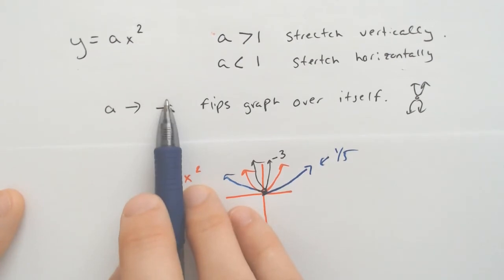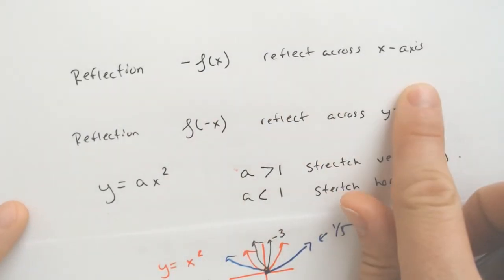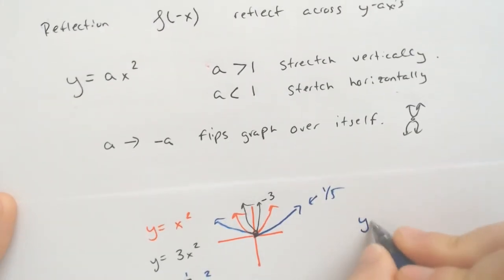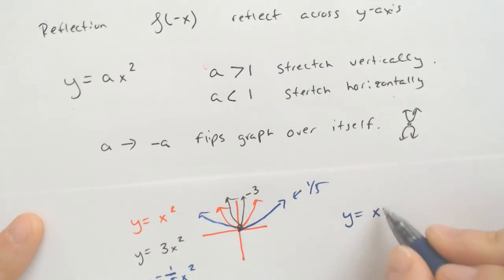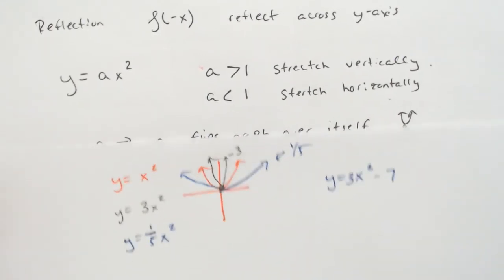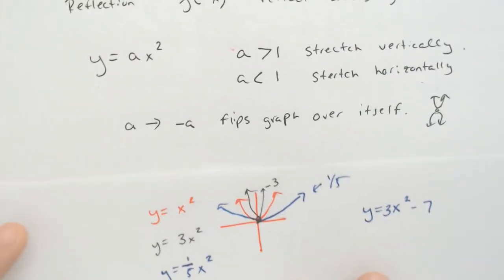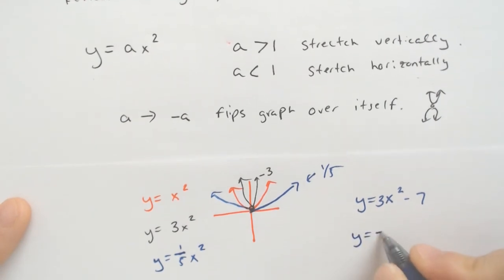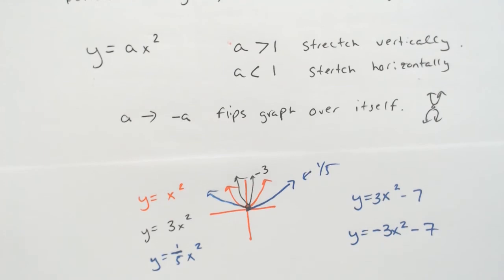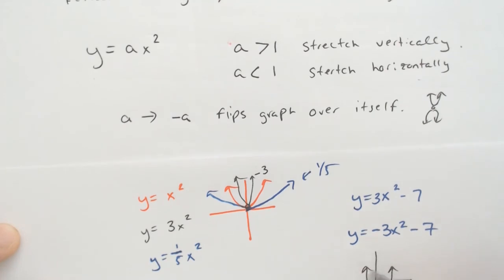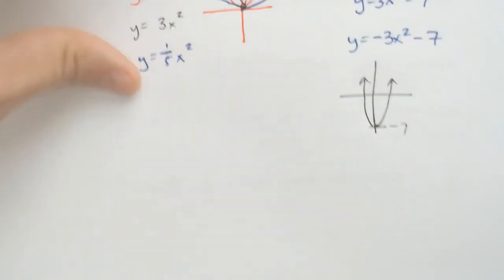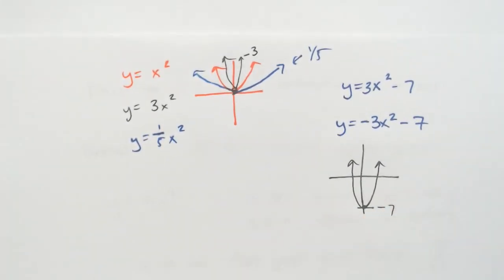The last thing that sometimes gets people confused is if the a becomes negative, that does not guarantee it reflected across the x-axis. If only the a is flipped, let's say we have y equals 3x squared minus 7. If I change the a and only the a, that would be y equals negative 3x squared minus 7. What would that look like? Well, the original 3x squared minus 7 would be down here at negative 7 and would be facing up. And it should be stretched vertically because there's a 3 in front, remember? So here, that's the original 3x squared minus 7. What about if I just change it to a negative in front? The only thing that's going to change then, it's still going to have the y-intercept of 7, but now it faces down.